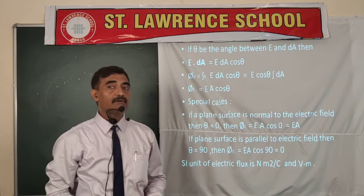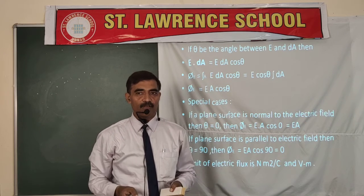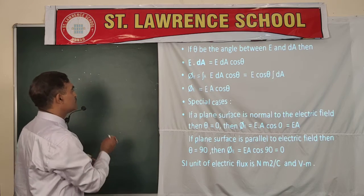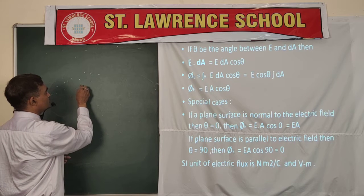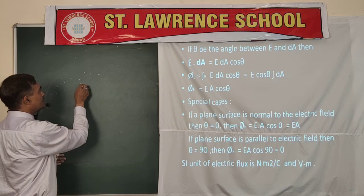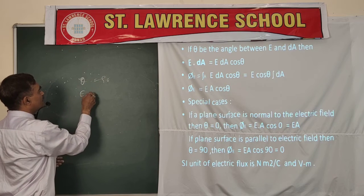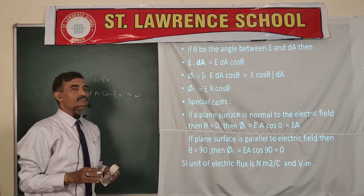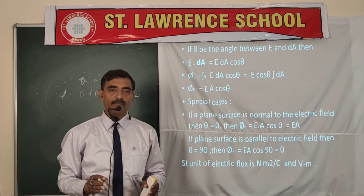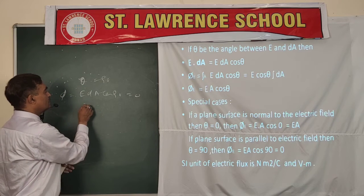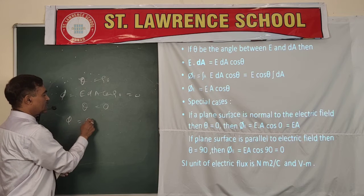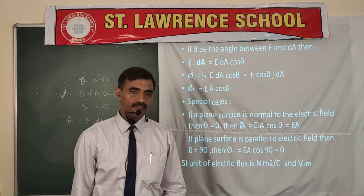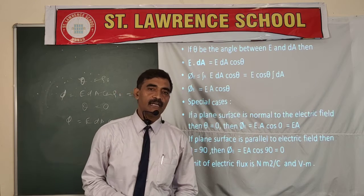Whenever a surface is placed parallel to the electric field, theta is 90°. In that case, the flux linked is E·dA·cos90° = 0. So when the surface is parallel to the electric field, no flux is linked — the flux is zero. But if the surface is perpendicular to the electric field, theta is 0°, and the flux becomes E·dA·cos0° = E·dA, which is the maximum flux linked with the surface. In that case, the maximum number of electric lines crosses that surface.